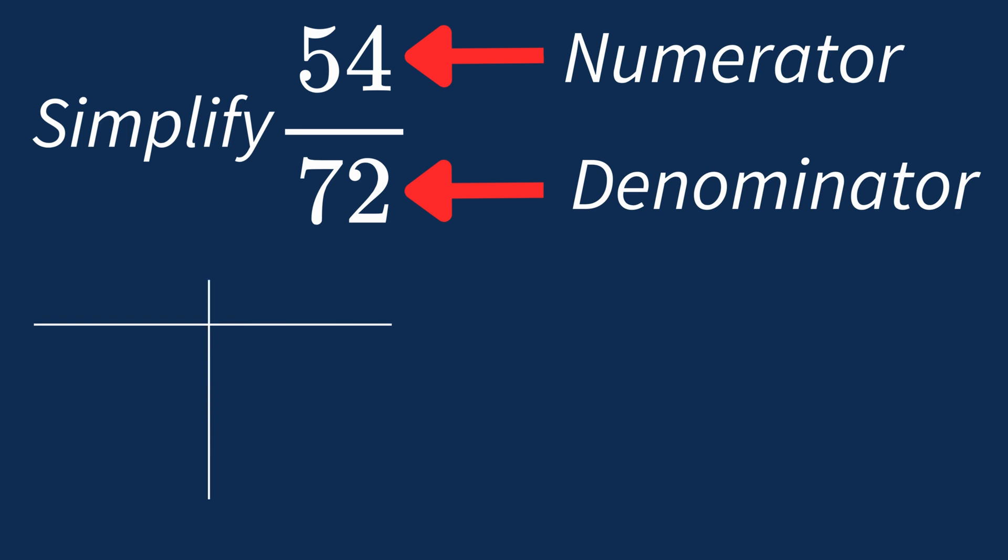First, let's list out the factors for each. For 54, the factors are 1, 2, 3, 6, 9, 18, 27, and 54.